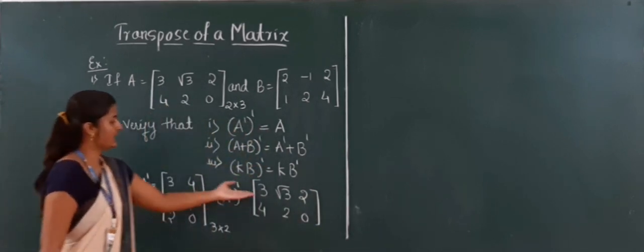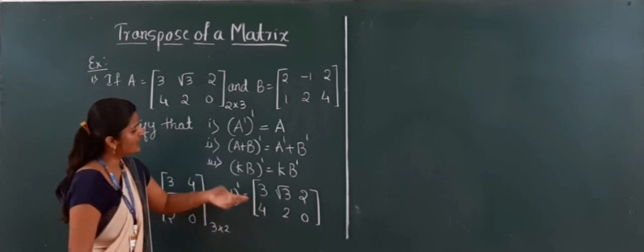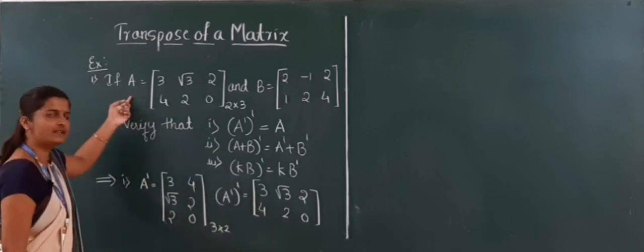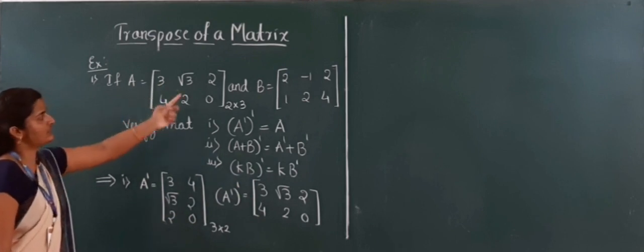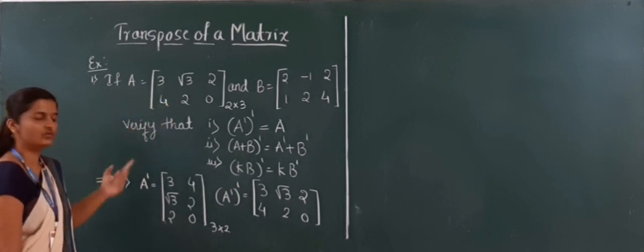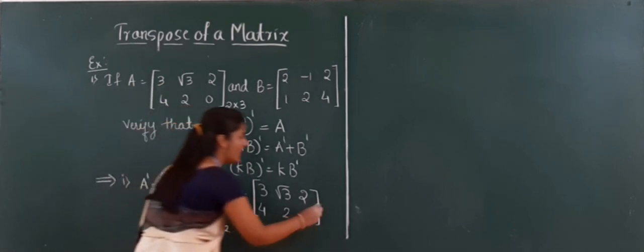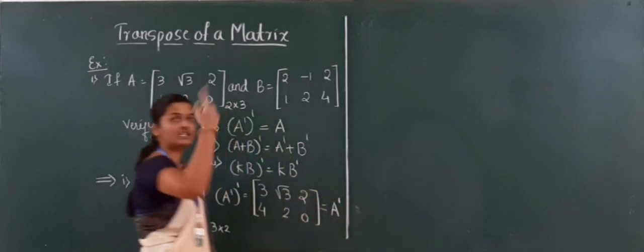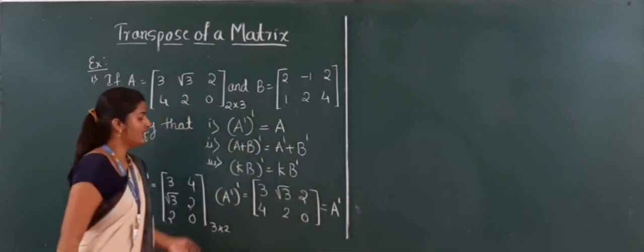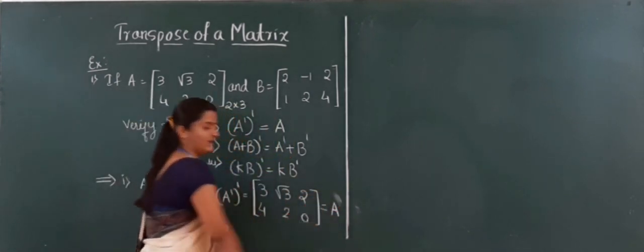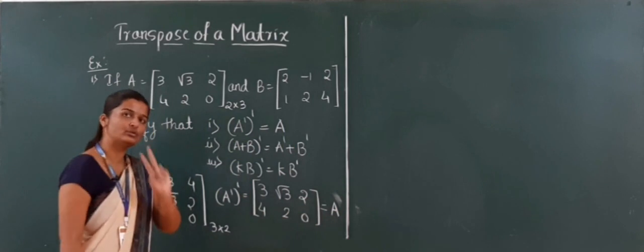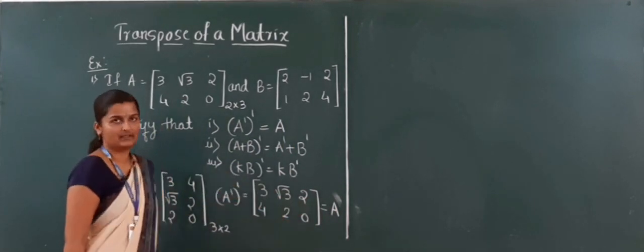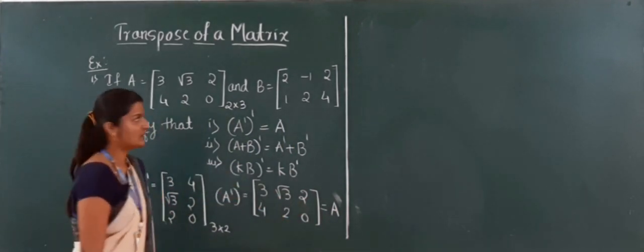The result is the matrix with elements 3, root 3, 2 in the first row and 4, 2, 0 in the second row — which is exactly the original matrix A. So if you apply transpose two times, you get back the same A. First property is verified.